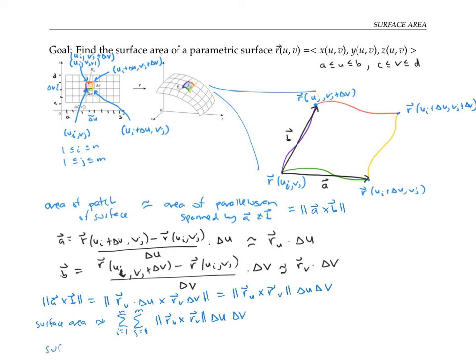For the exact surface area, I let those patches get smaller and smaller — letting n and m go to infinity and taking the limit. That gives me the double integral of |r sub u cross r sub v| du dv, where u ranges between its bounds a and b, and v ranges from c to d.